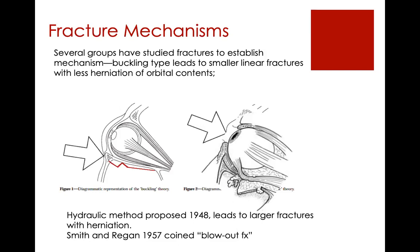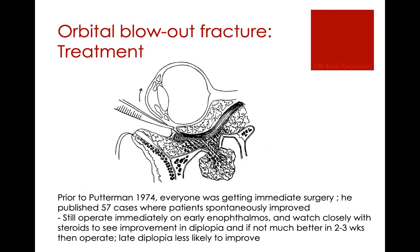Before 1974, surgeons would operate immediately on pretty much any orbital fracture. Then Luther published 57 cases where he followed patients with orbital fractures and noticed that a lot of these patients spontaneously improved — they did not necessarily need treatment. He would still operate immediately if there was early enophthalmos, suggesting a really large fracture, and would watch closely with steroids to see if symptoms like diplopia were improving. A lot of patients with a small fracture without significant enophthalmos or diplopia really don't necessarily need treatment.